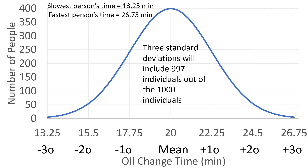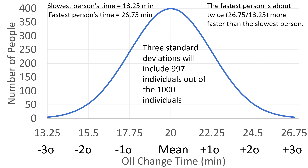The slowest person takes about twenty-six point seven five minutes compared to the fastest person at thirteen point two five minutes, which is about twice as fast. So how do we include these differences in our time study? When we are observing a person working and trying to determine a standard time, we have to account for these different types of speed — someone might be super fast, someone might be super slow.